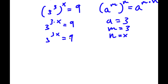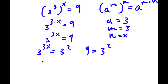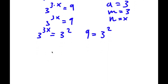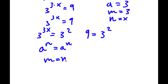Now 9 here is the same thing as 3 squared. So I have 3 to the power of 3x is equal to 3 squared. Another property of exponents is that if I have something in the form a to the power of m equals a to the power of n, then m is equal to n — because if the bases are the same, the exponents must be equal as well.